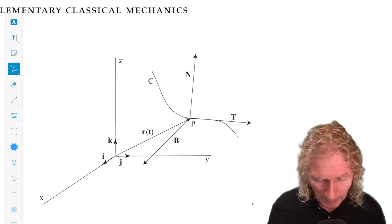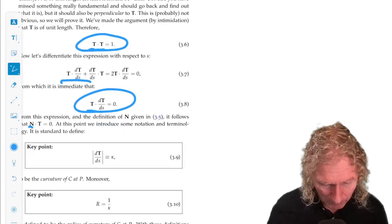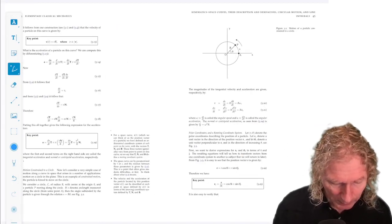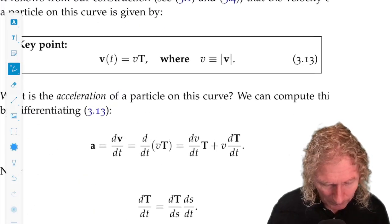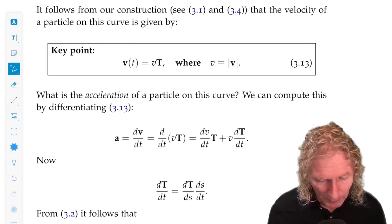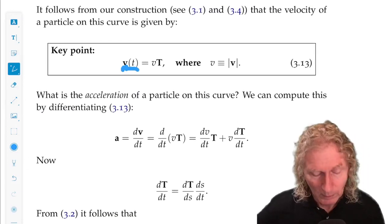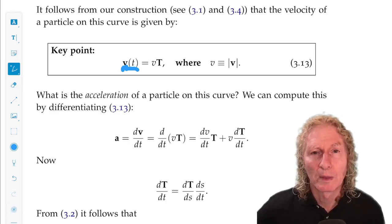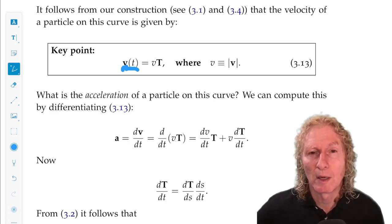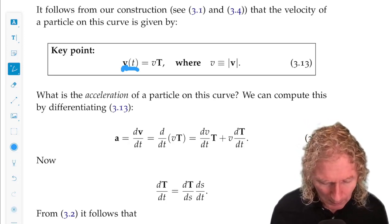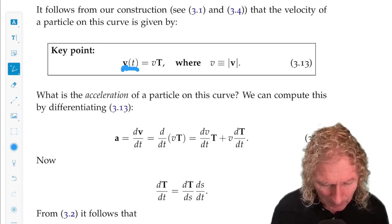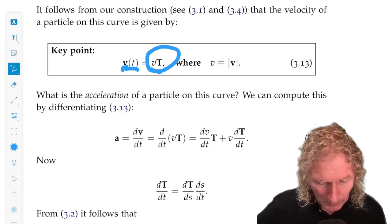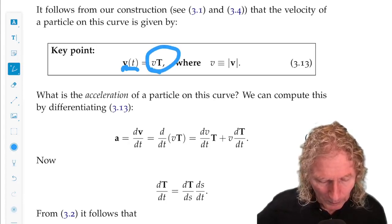So what next? We're going to differentiate these quantities. Now, the velocity, remember, is what? It's T divided by magnitude of T.